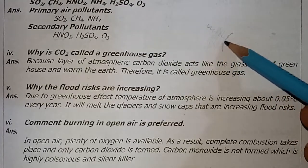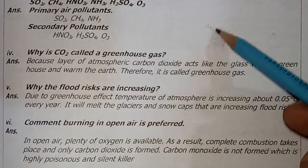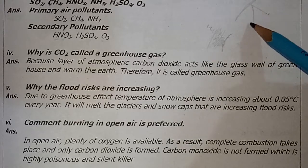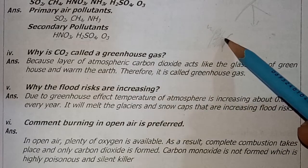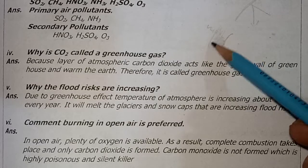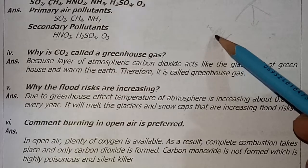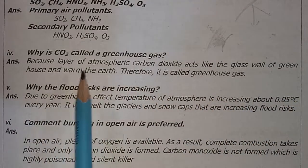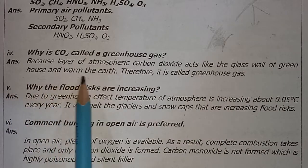Heat with shorter wavelengths passes through, but the longer wavelengths are trapped in the middle by the CO₂ layer, just as glass traps heat. When heat with shorter wavelengths enters, carbon dioxide traps the longer wavelengths, acting like glass. Therefore, the layer of atmospheric carbon dioxide acts like a glass wall of a greenhouse and warms the Earth.